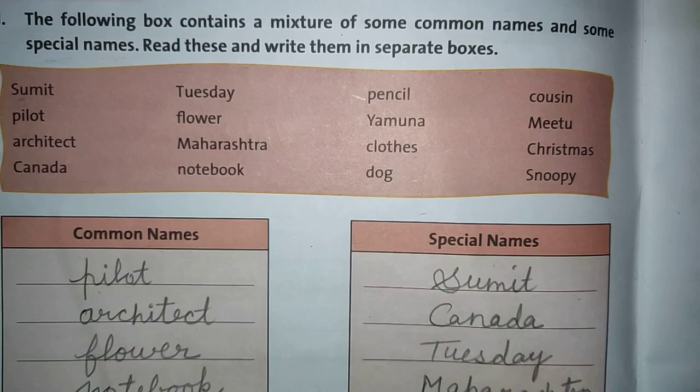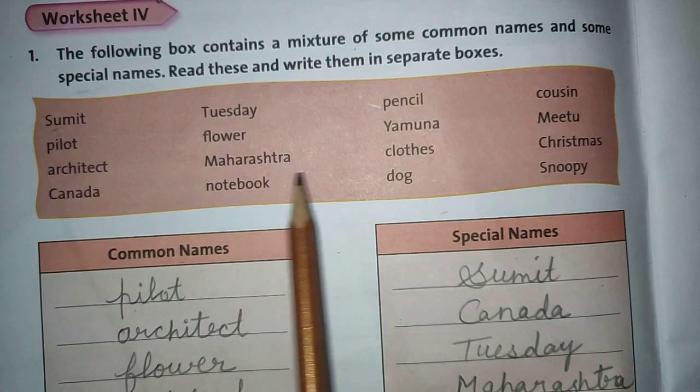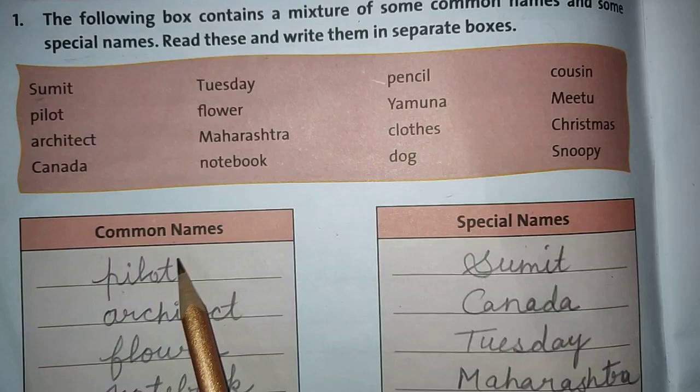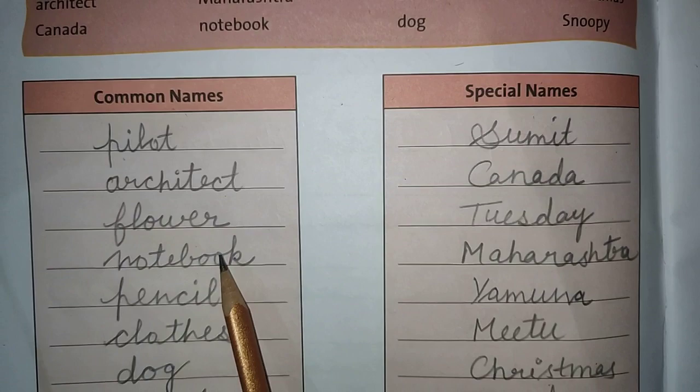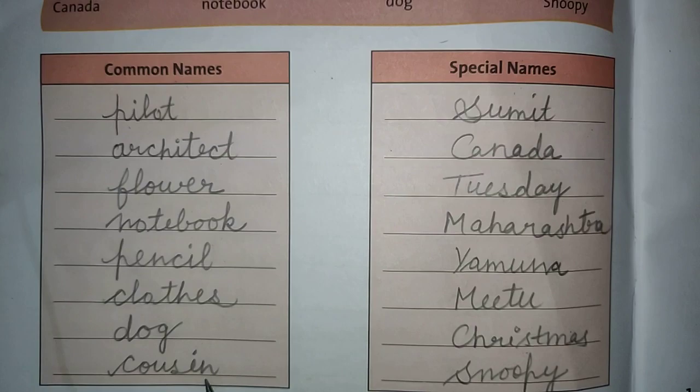Here are the answers for worksheet 4. In this worksheet, you have to separate common names and special names from the 8th box. The common names are: pilot, architect, flower, notebook, pencil, cloth, dog, cousin.